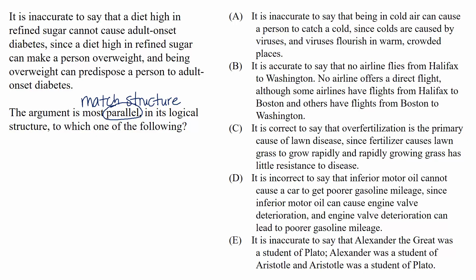it is inaccurate to say that a diet high in refined sugar cannot cause adult-onset diabetes since a diet high in refined sugar can make a person overweight and being overweight can predispose a person to adult-onset diabetes. So this stimulus is basically one long sentence. And which part of it is our conclusion?